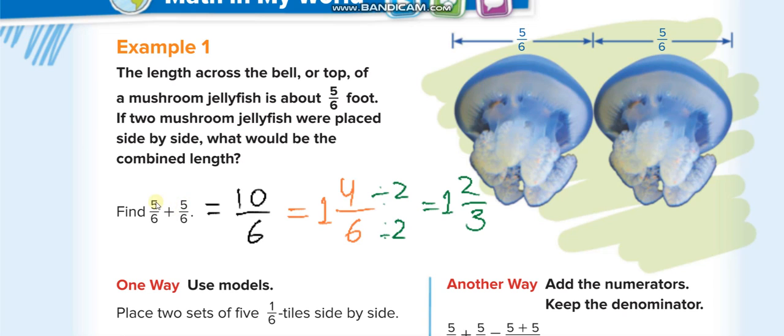When the denominators are the same, we say they are like fractions. In that case, what we do is just add the numerators. The denominator stays the same because the denominator shows you the total number of parts. So 5 over 6 plus 5 over 6 equals 10 over 6.